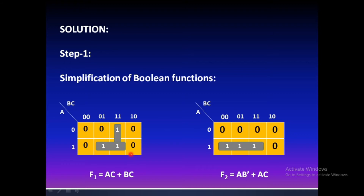The expression for F1 is AC + BC, where AC comes from the first group and BC from the second. For F2 with minterms 4, 5, and 7, grouping gives two product terms: AB̄ plus AC. So F2 = AB̄ + AC.